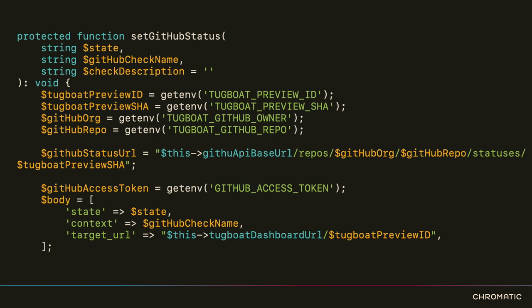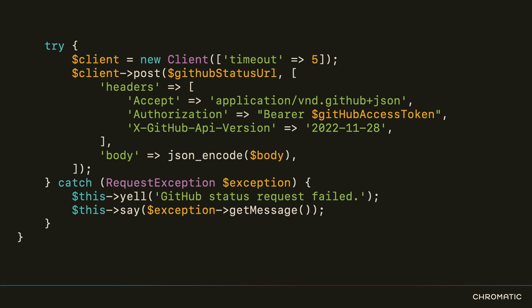Here we have our method that actually talks to the API. We're setting everything up using environment variables to get the appropriate data, setting the URL to call, and setting the request body. Then we use Guzzle to make the request instead of curl — this is an example of relying on other PHP packages required via Composer, rather than making assumptions about what's installed on the system. We make a POST request passing in the body and headers, then handle any exceptions.